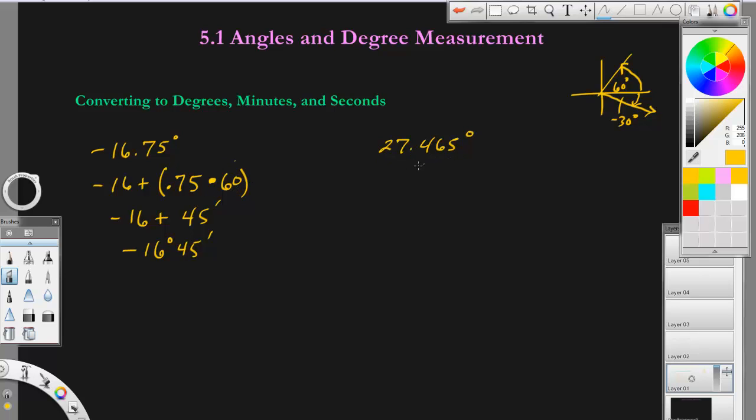On this one, watch what happens. We'll take our 27, it's going to be 27 degrees. Then we're going to take 0.465 and multiply that by 60. When we do that, you are going to get 27.9. You'll notice here, I didn't get a decimal before. If you do get a decimal like the 0.9, you've got another problem to do.